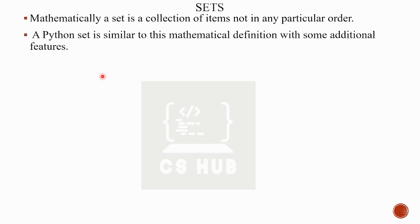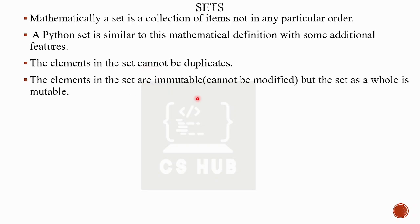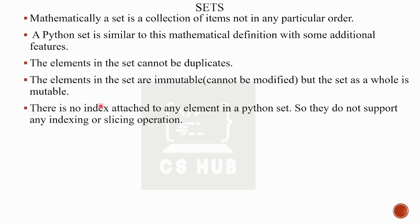A Python set is similar to this mathematical definition with some additional features. It is an unordered collection of items. Elements in the set cannot be duplicates. Set is like a mathematical set — no duplicates allowed. Then, elements in the set are immutable. Set as a whole is mutable, but elements in the set are immutable. Set is unordered, meaning there is no index attached to any element in a Python set. They do not support any indexing or slicing — indexing is not available.